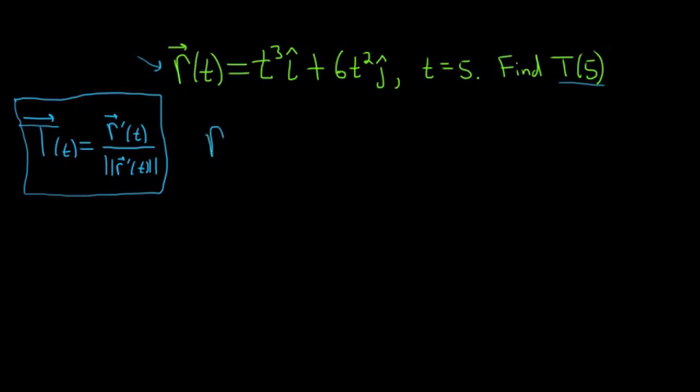We'll start by taking the derivative of r. So r prime of t equals, taking the derivative of the first component, we get 3t squared i-hat plus 12t j-hat. And at this point, we don't have to differentiate any further.